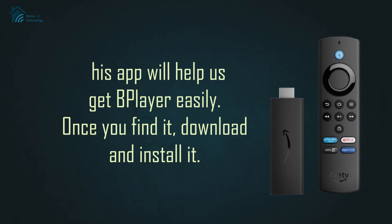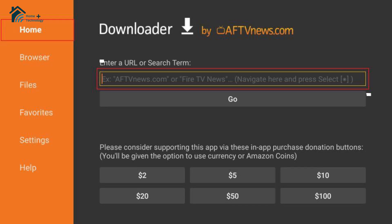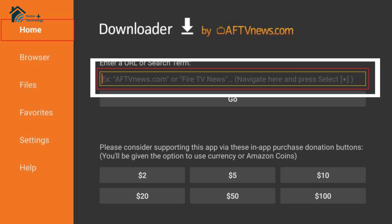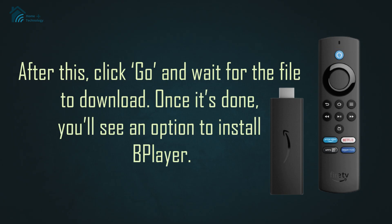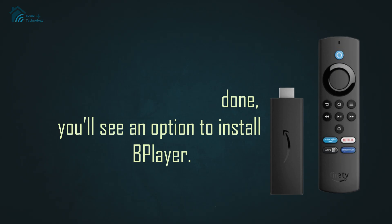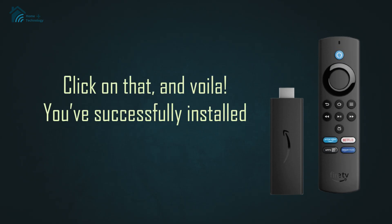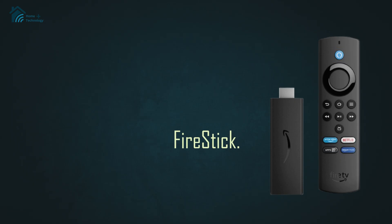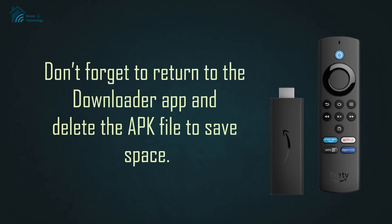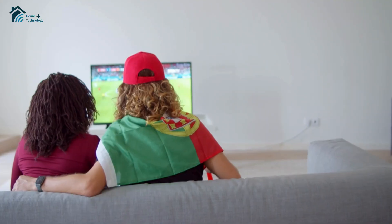Once you find it, download and install it. Open the Downloader app and in the URL field, enter the link for the B-Player APK, which you can easily find online. After this, click Go and wait for the file to download. Once it's done, you'll see an option to install B-Player — click on that and voila! You've successfully installed B-Player on your Fire Stick. Don't forget to return to the Downloader app and delete the APK file to save space. Enjoy your streaming!